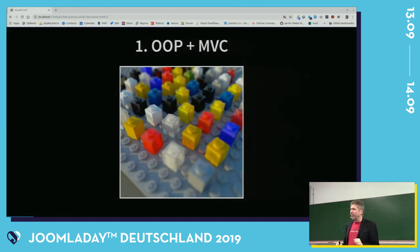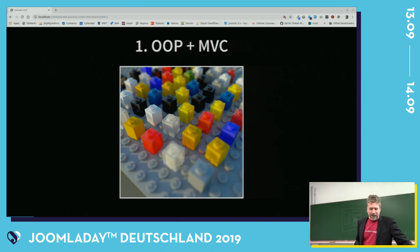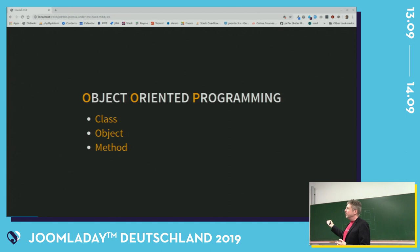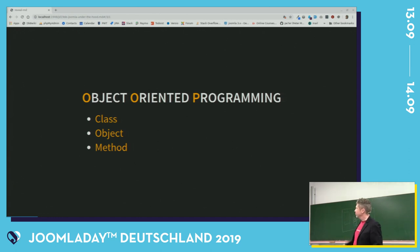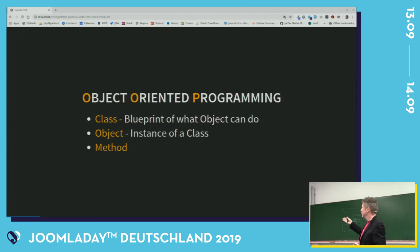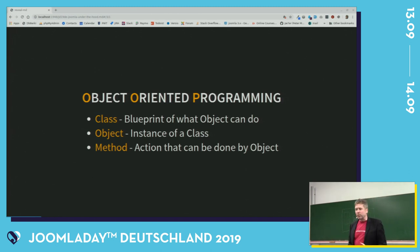So who in the room is a programmer? You probably know what object-oriented programming is. I hope I can give you a view of how to explain it to people who don't know what OOP is. In OOP, you have classes, objects, and methods. A class is a blueprint of what an object can do. An object is an instance of a class, and a method is an action that can be done by an object. It's a bit abstract, so I'll try to explain it differently.